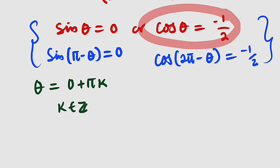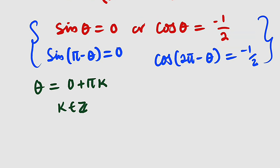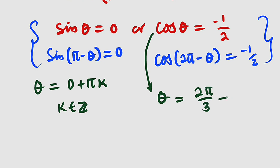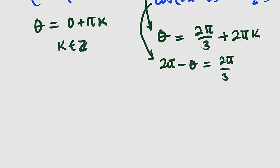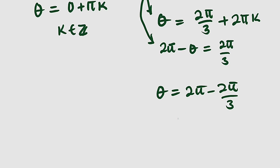For the second equation, taking cosine inverse of both sides of the first case gives θ = 2π/3, and you can add multiples of 2π where k is an integer. For the second case, taking cosine inverse gives 2π minus θ equals 2π/3, so making θ the subject: θ = 2π − 2π/3. Three times two is six, and six minus two is four, so θ = 4π/3.